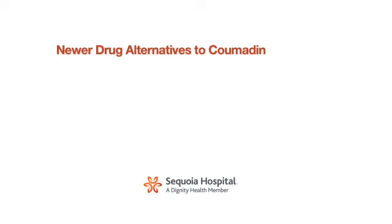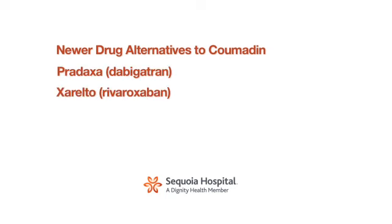The newer alternatives to coumadin include Pradaxa, Xarelto, and a very recently approved drug, Eliquis. These fortunately provide us a lot of good options to coumadin where you don't have to have regular blood checks, and they can be very effective for full anticoagulation without having to worry about diet and other drug interactions.